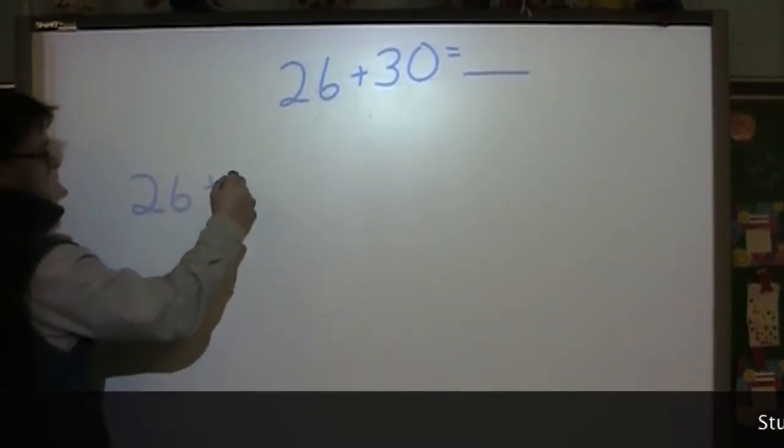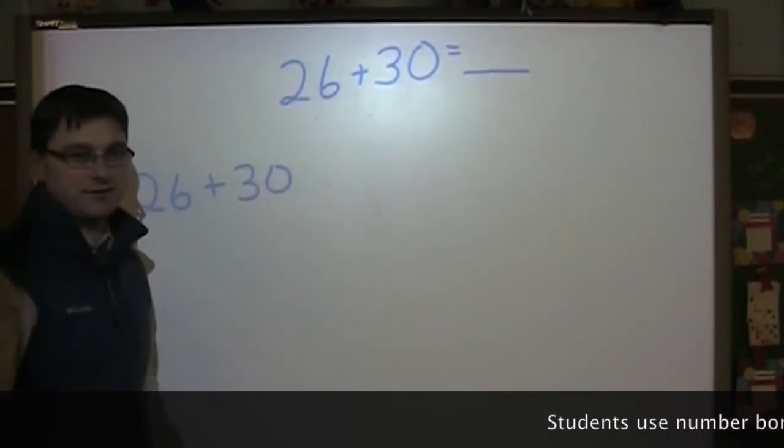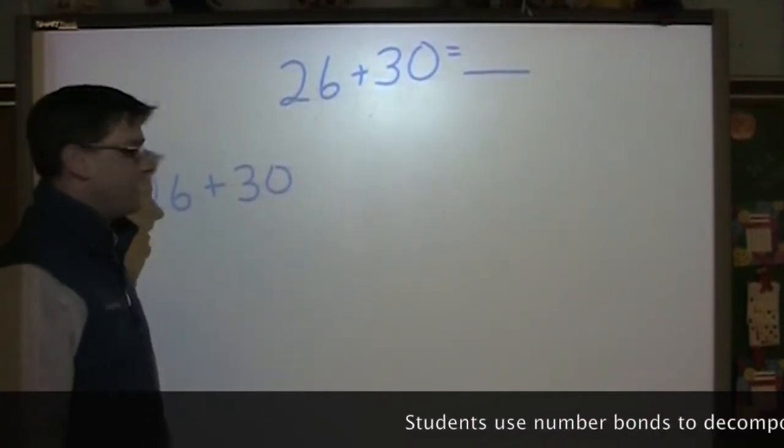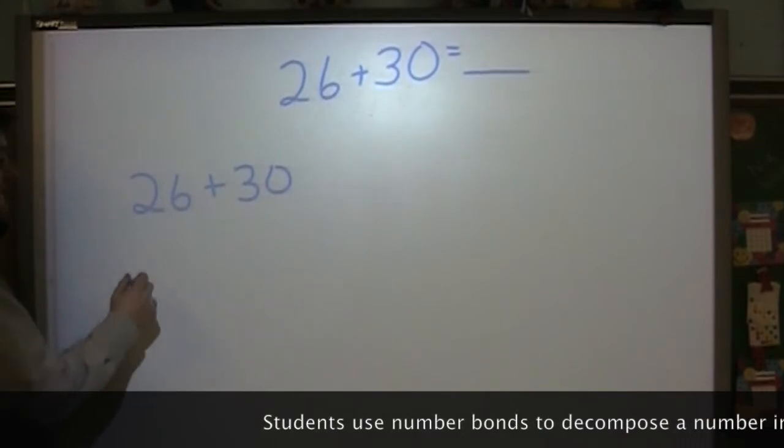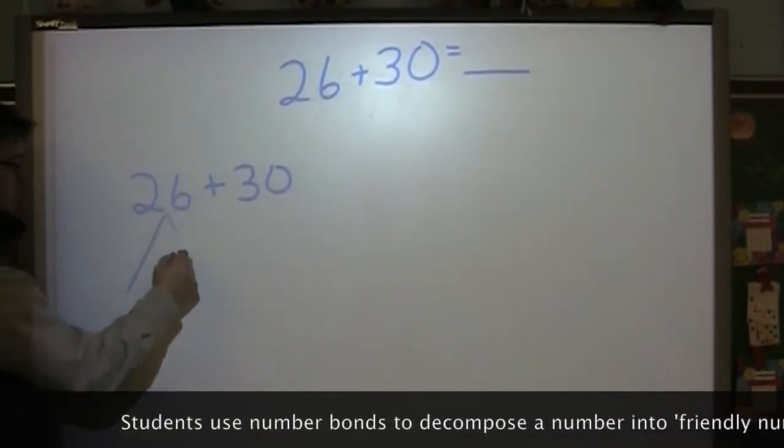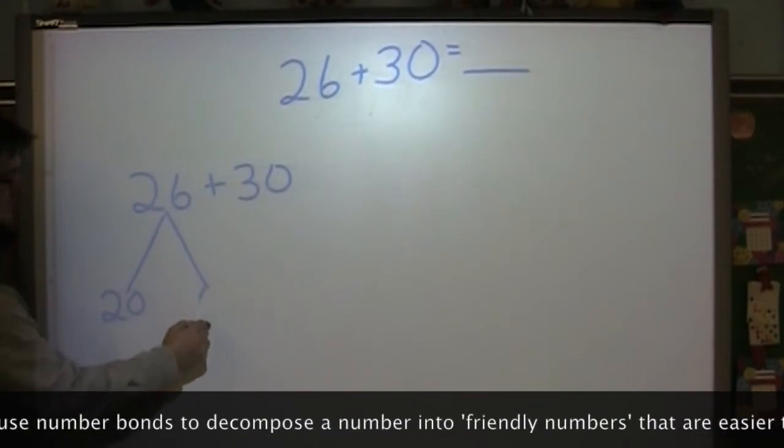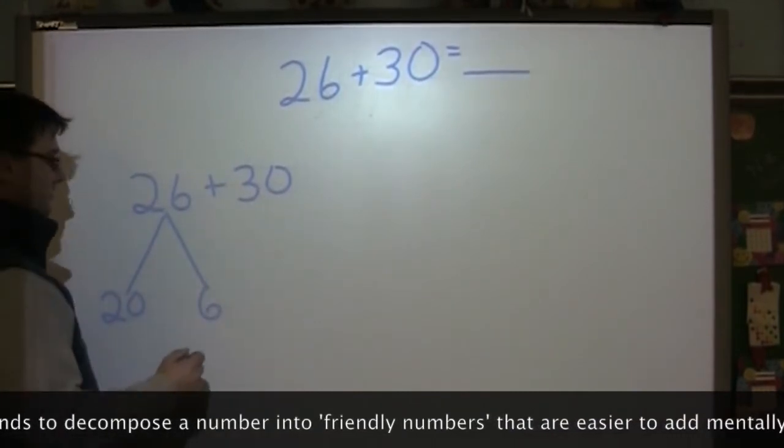26 plus 30. The 30 is a nice round 10 number so we don't need to touch the 30. We'll move to the 26 and we'll make our number bond with 20 and 6.